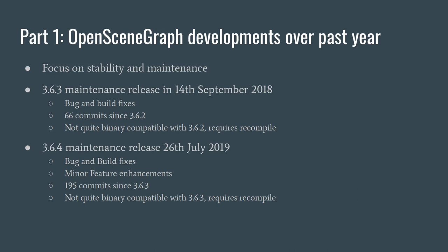That was the 3.6.3 release focused on bug fixes and build fixes. We had 66 commits since the previous 3.6.2 release. It's not binary compatible unfortunately, as a couple of changes required minor changes to the public API, so you'll just need to recompile. You shouldn't have any issues apart from that.